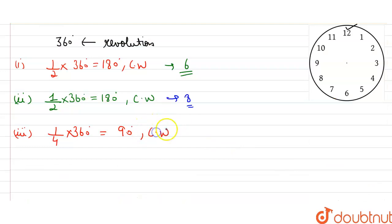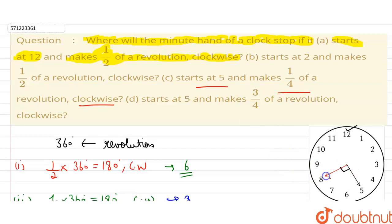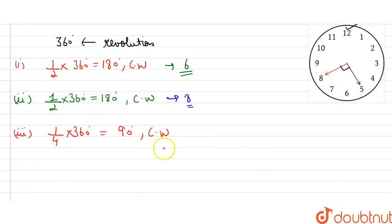It starts at 5 and makes a 90 degree angle clockwise. If it makes a 90 degree angle from 5, it will end up at 8. So 90 degrees clockwise from 5 means it ends up at 8.